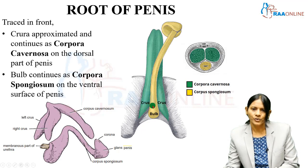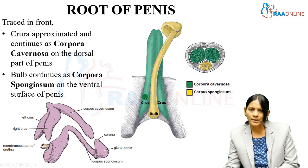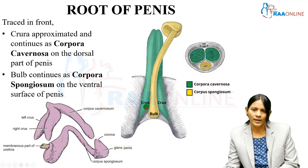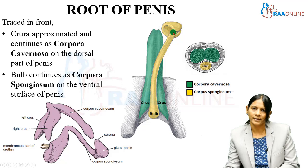Traced anteriorly from the root of the penis, the diverging crura converge together and form a single body. They continue independently but are attached in the midline, more so in the anterior aspect, with limited posterior attachment. The crura continue as the corpora cavernosa, and the bulb continues as the corpora spongiosum. The corpora spongiosum finally expands to become the glans penis — so it starts as the bulb, ends as the glans penis, and in between is the corpora spongiosum.